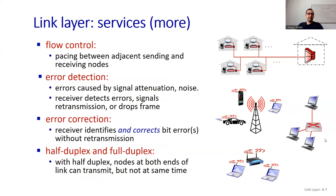Flow control is about pacing between adjacent sending and receiving nodes. If you are using a shared medium, you will have collisions, so you need solutions for that. Error detection: errors caused by signal attenuation and noise — the receiver detects errors and signals retransmission or drops the frame. Error correction: the receiver identifies and corrects bit errors without retransmission. Half-duplex: nodes at both ends of the link can transmit, but not at the same time.